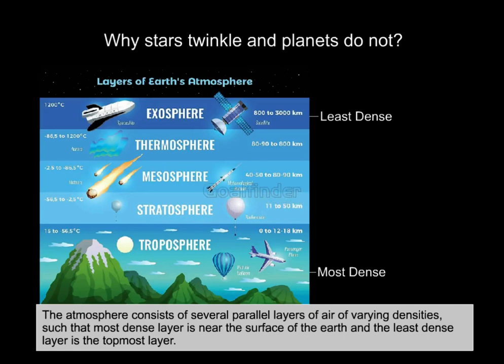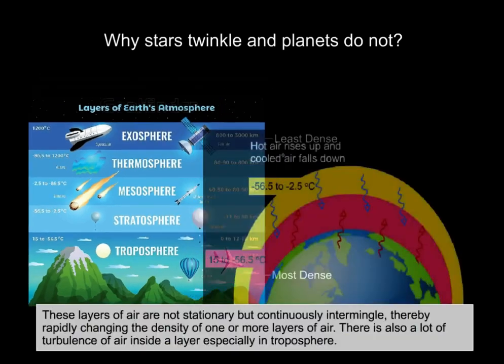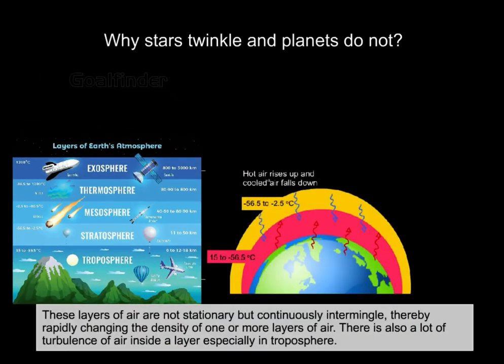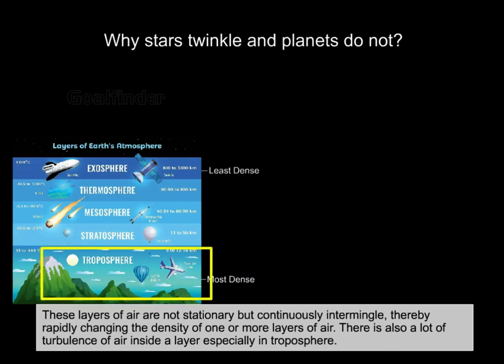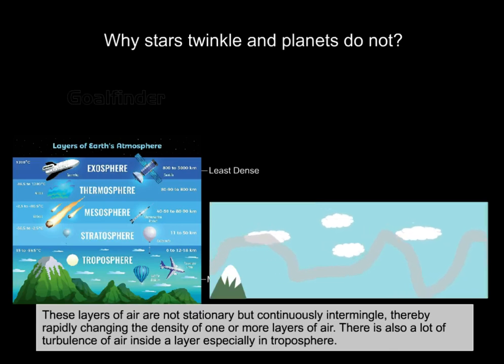The atmosphere consists of several parallel layers of air of varying densities, such that the most dense layer is near the surface of the Earth and the least dense layer is the topmost layer. These layers of air are not stationary but continuously intermingle, thereby rapidly changing the density of one or more layers of air. There is also a lot of turbulence of air inside a layer, especially in the troposphere.